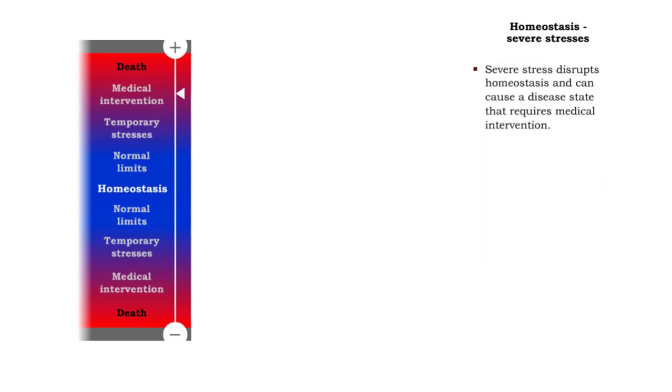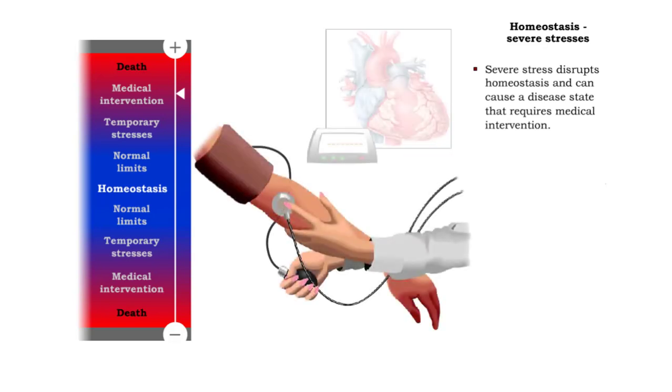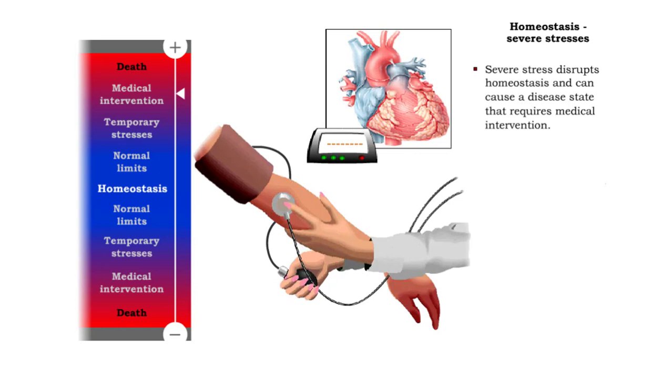When a stimulus or stress is more severe or constant, such as a high fever or chronically high blood pressure, an underlying disease or disorder may be indicated. Medical treatment and intervention is often needed to return the body to homeostasis.